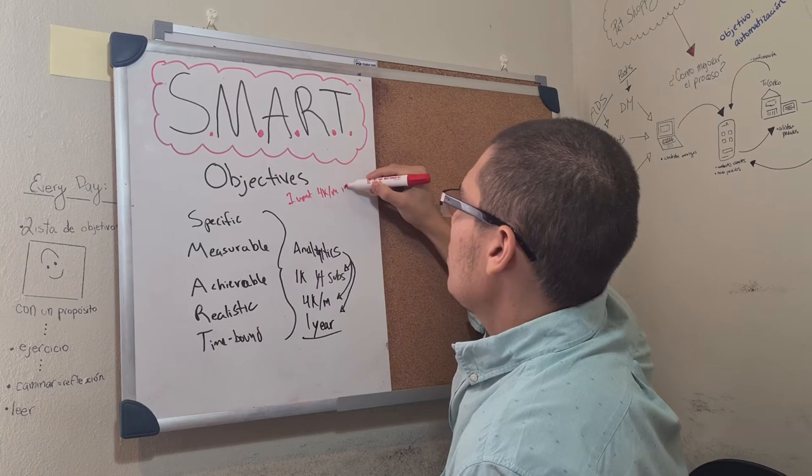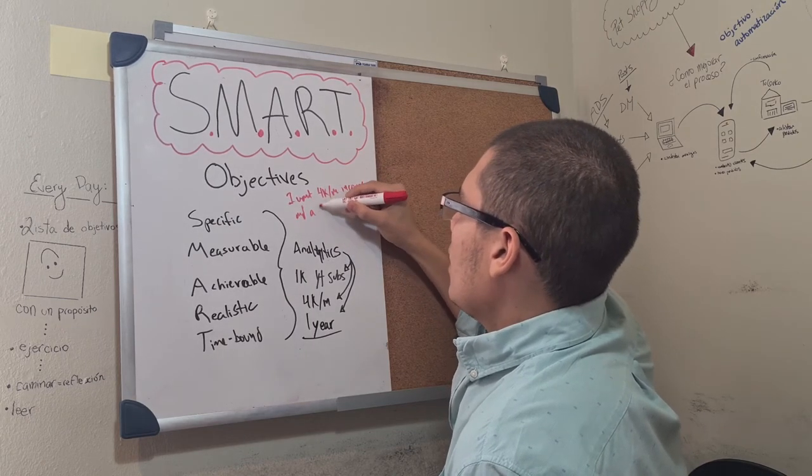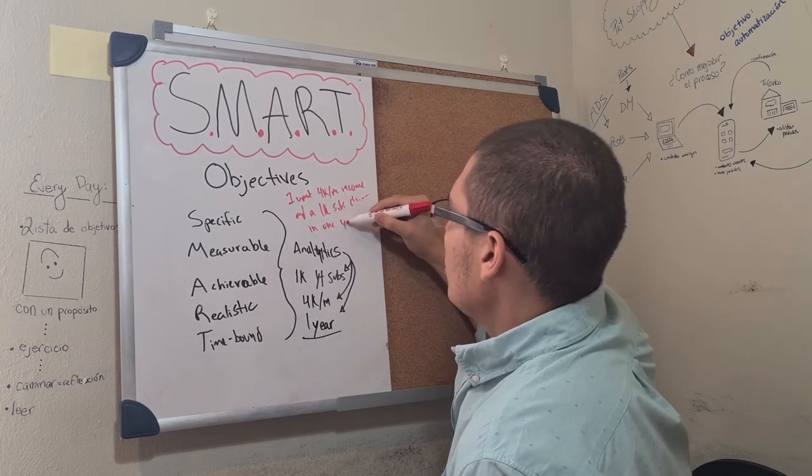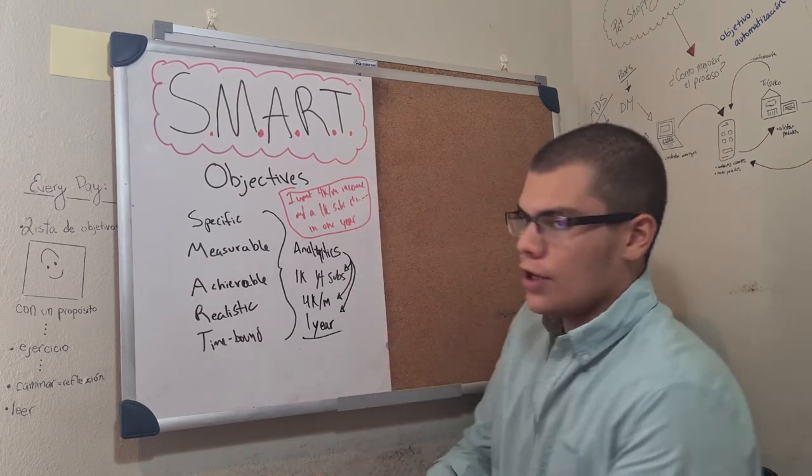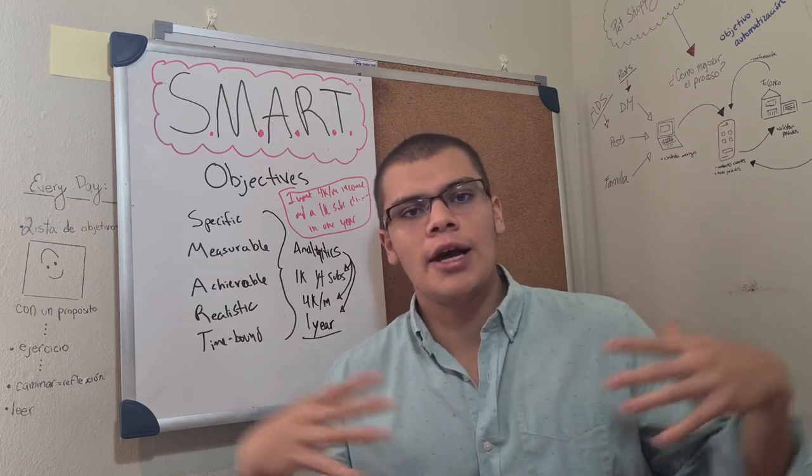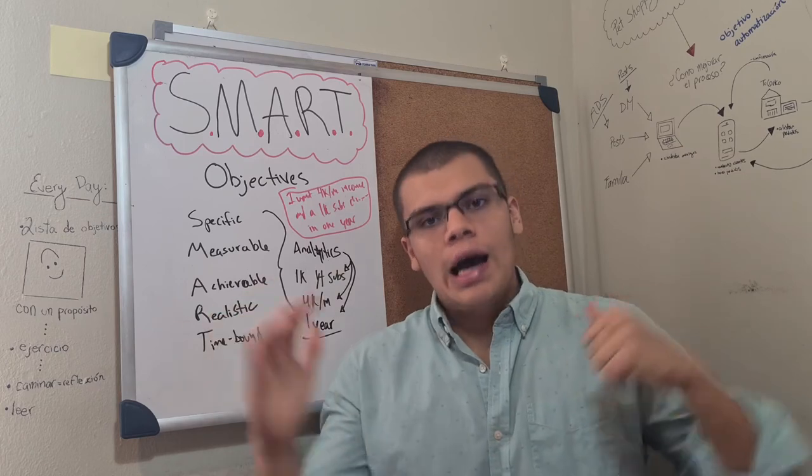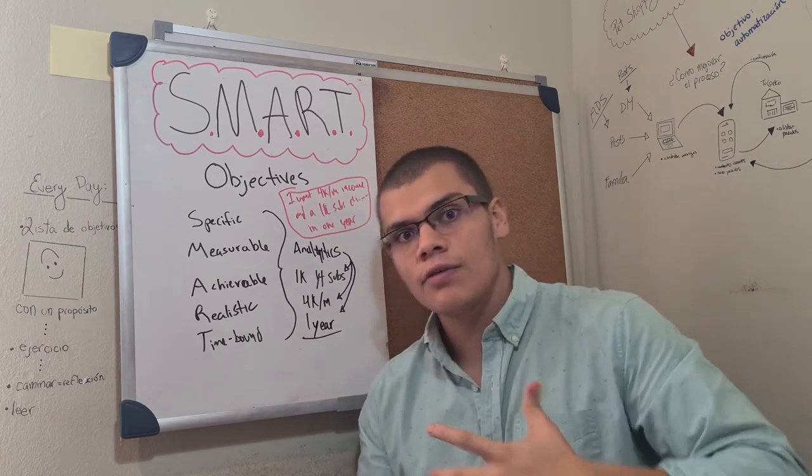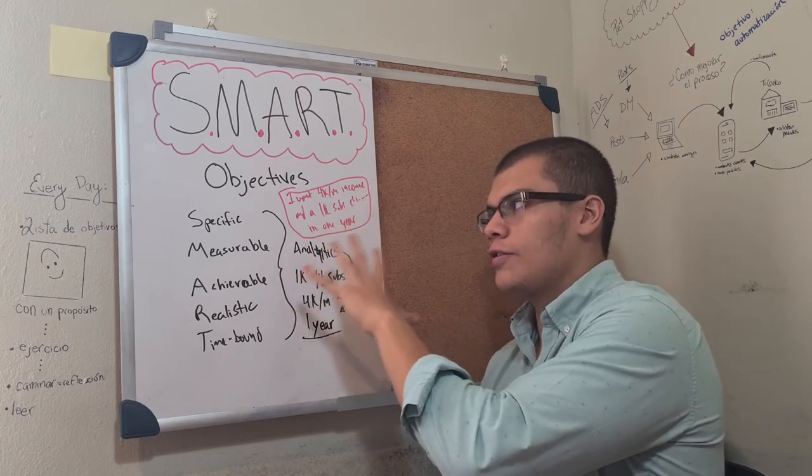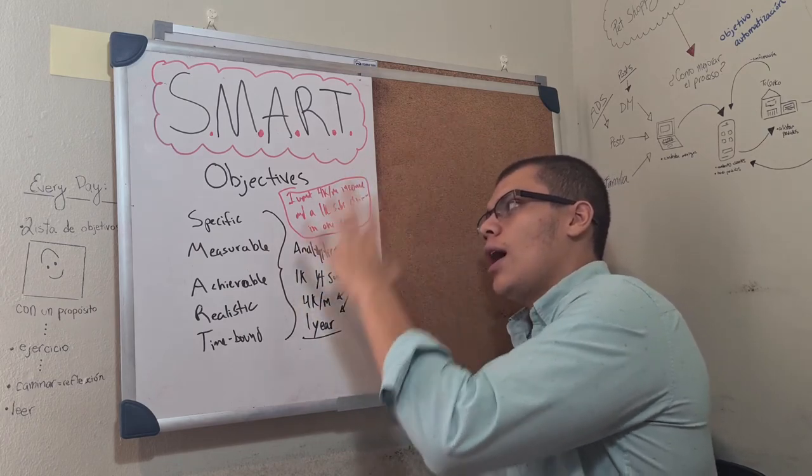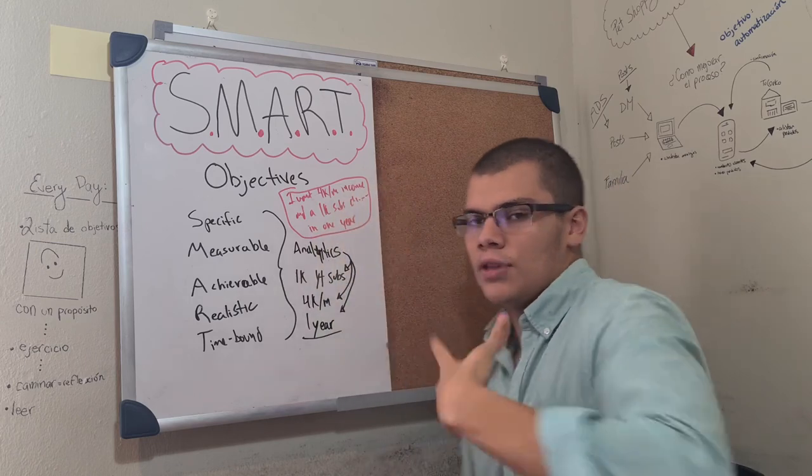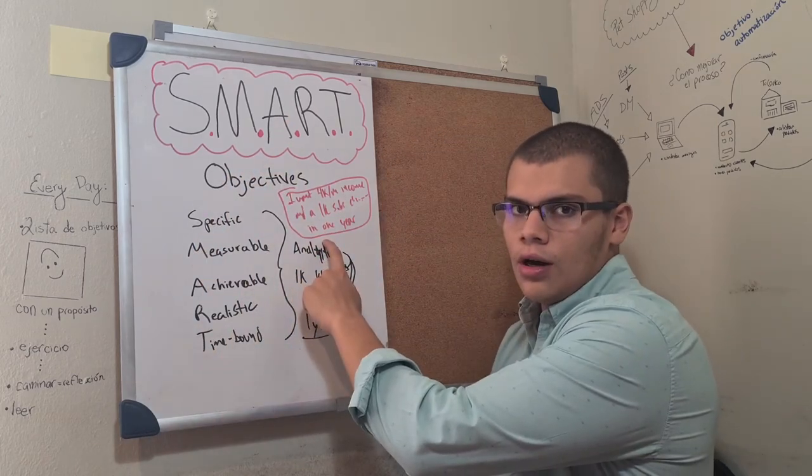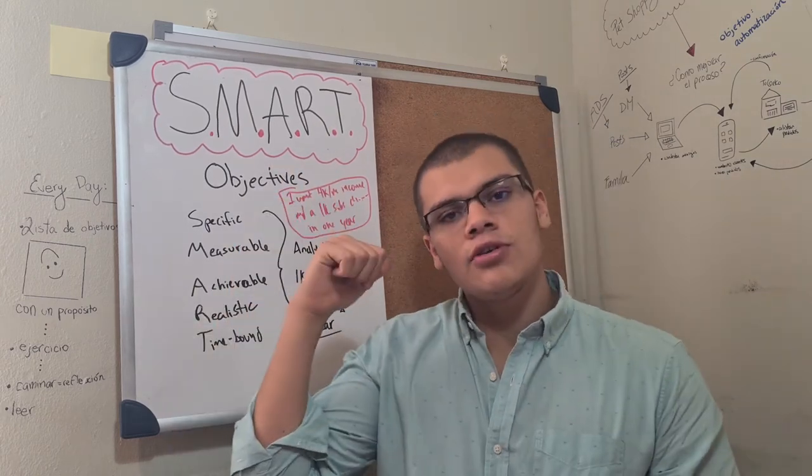So I want 4K per month income and a 1K subs channel in one year. You see, so I'm being super, super specific. You guys now know exactly why am I doing what I'm doing, what is my focus for the next year, where do I want to be, how am I going to get that. This is actually my goal for one year. I'm actually sharing a little bit of insight on myself. This is my objective, I'm being 100% honest. So I want to earn 4K per month income and a 1,000 subscribers channel in one year. That is my focus for this year. So every single day I wake up and I work and I do my power list, I'm going to take this specific objective, this SMART objective, into consideration and I'm going to strive every single day to achieve that specific goal.